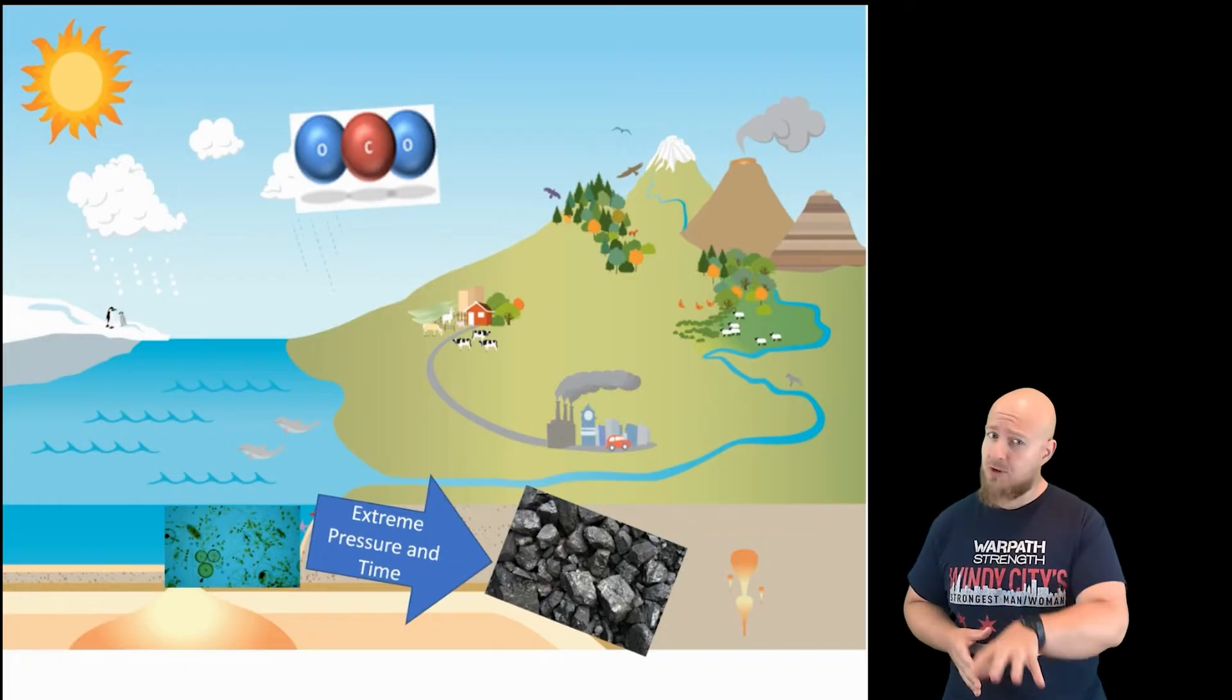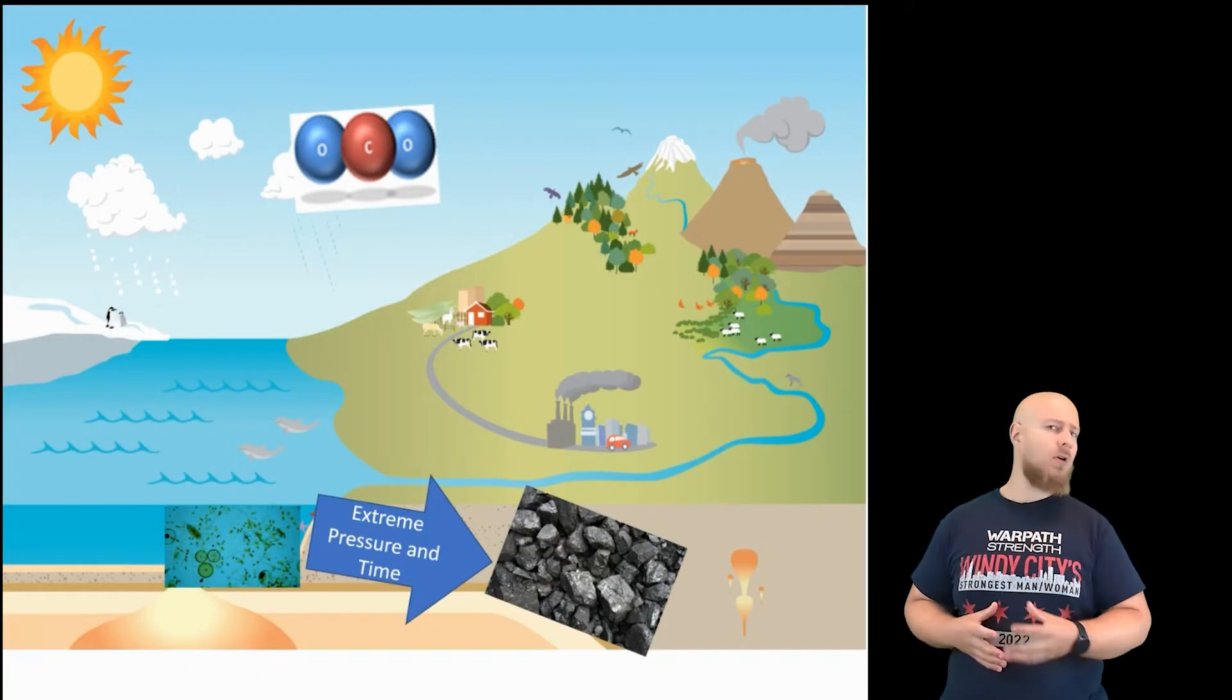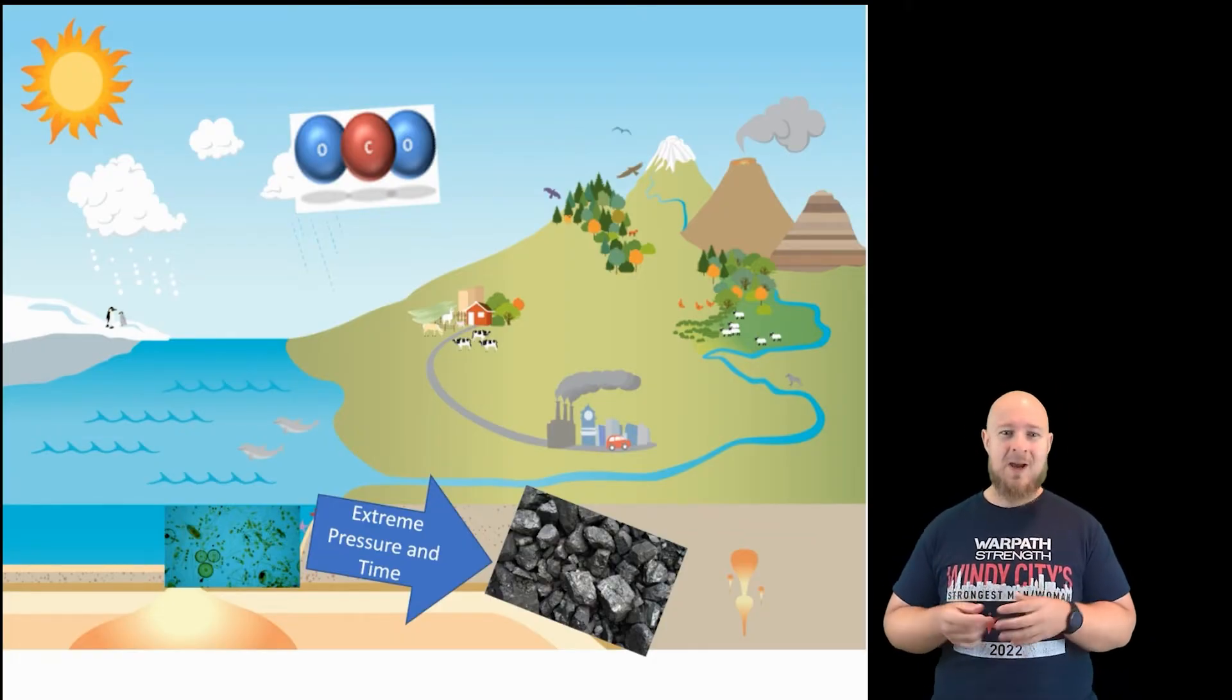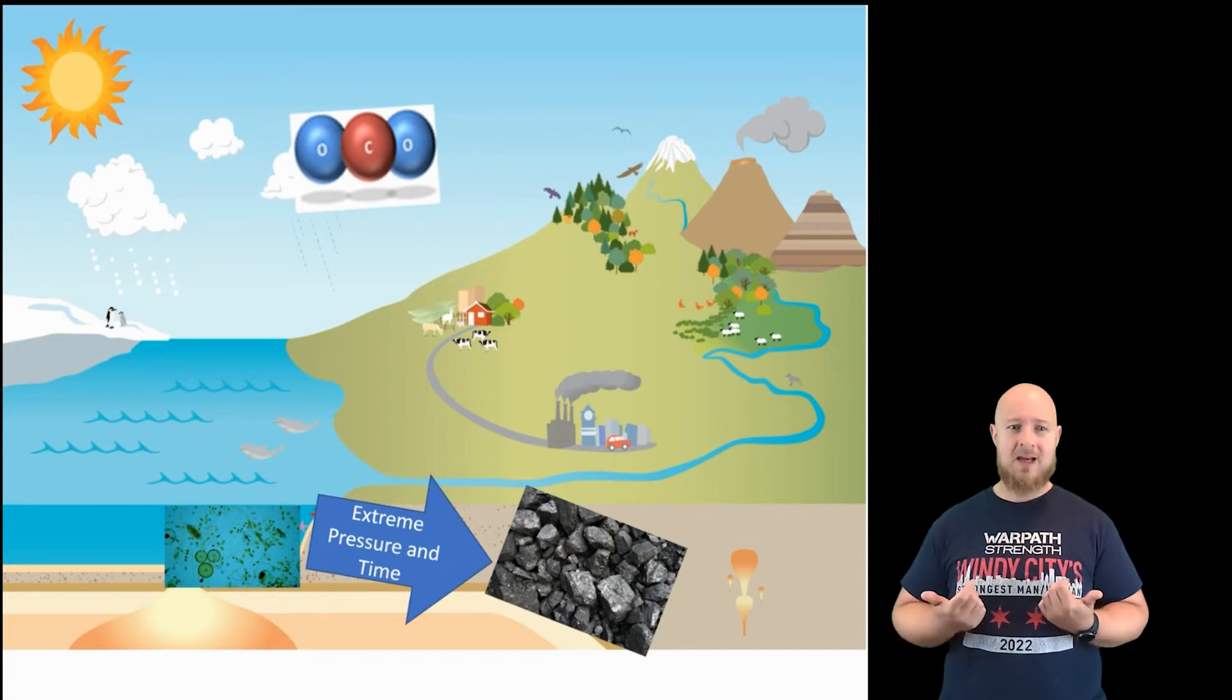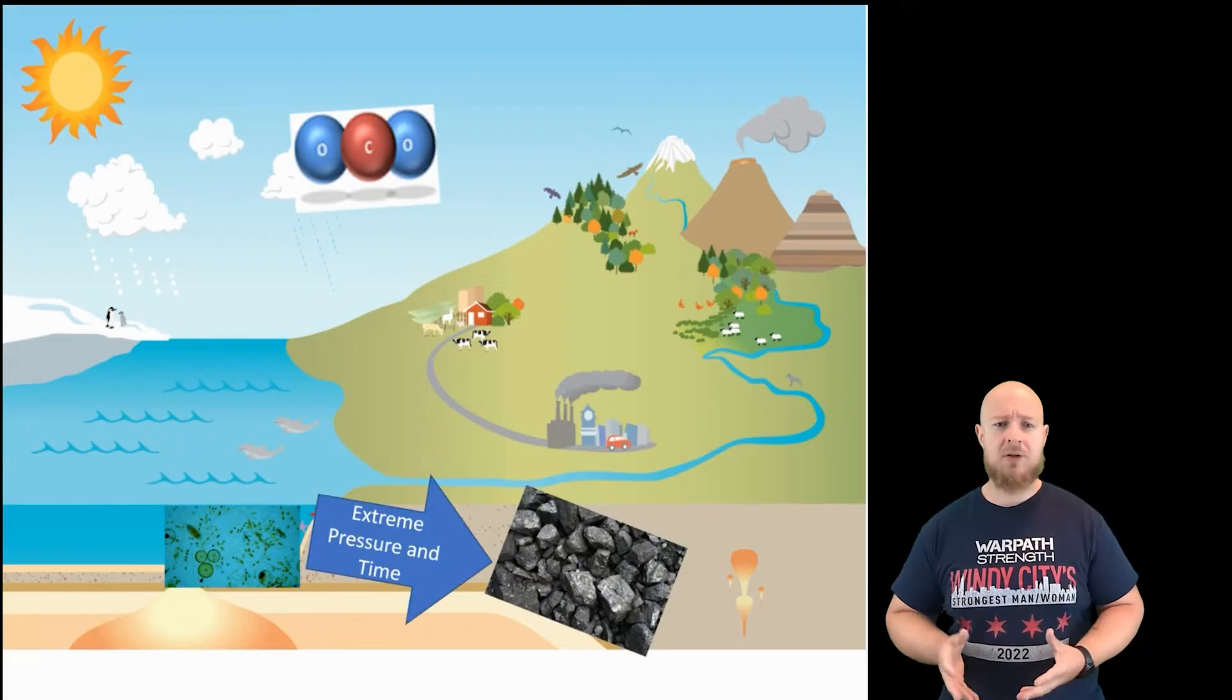The lithosphere, especially in rocks, end up having the largest residency time for carbon, and humans are disrupting that residency by removing carbon, burning it, and putting all of that into the atmosphere as carbon dioxide or other carbon molecules like methane.